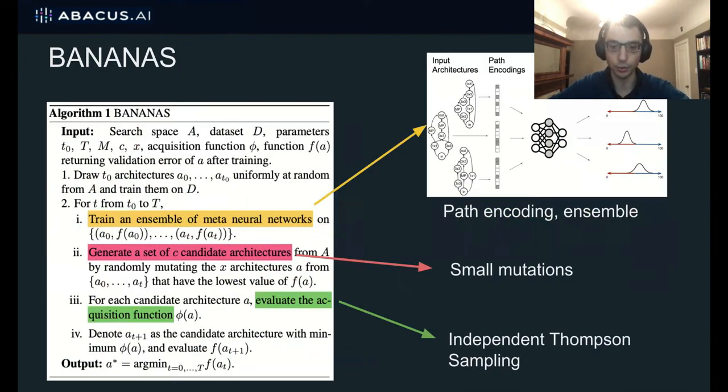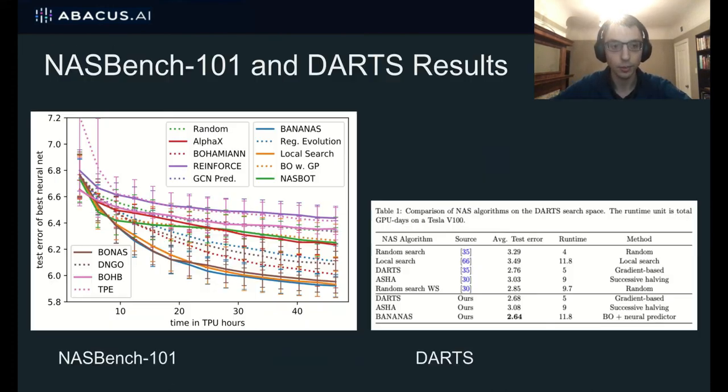So now we use this analysis to define Bananas where we plug in the best choice for each component. So now that we have our algorithm, we test it against other NAS algorithms on a few different search spaces. So we run exhaustive experiments on NAS bench 101 as well as DARTS. And we find that Bananas is very competitive on these benchmarks.